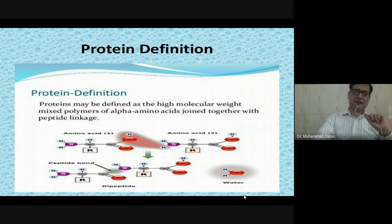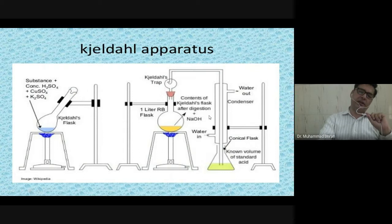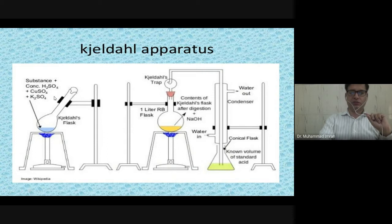In the Kjeldahl method, you analyze the protein content with the Kjeldahl apparatus. First, you burn the substance — mostly a protein-containing substance — with potassium sulfate, copper sulfate, and concentrated sulfuric acid. Copper sulfate is used as a catalyst, potassium sulfate increases the boiling point, and concentrated sulfuric acid is used for the digestion process. The protein is converted into ammonia and then into ammonium sulfate.